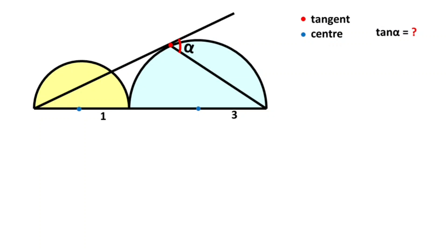Hello everyone, in this video we have two semicircles. The radius of the yellow semicircle is 1 and the radius of the blue semicircle is 3. These are given as centers, and here is a tangent. We need to find tan(α).